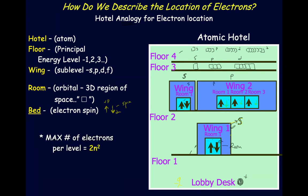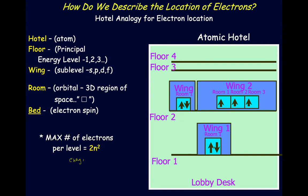The maximum number of electrons you can fit in a floor has the designation of 2n². In energy level 1, you put 1 in for n: 2 times 1 squared equals 2. In energy level 2, you have 2 times 2 squared, which equals 8, and so on. You can figure this out for each floor. Here n is the principal energy level.